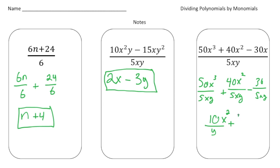Plus: 40 divided by 5 is 8, x squared divided by x is just x, and we're going to have a y in the denominator. Finally, minus: 30 divided by 5 is 6, the x cancels out, and again we're going to have a y down on the bottom.